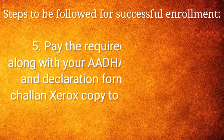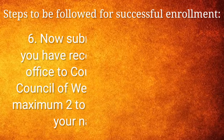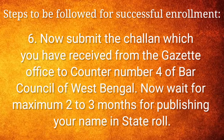Number 5: Pay the required fees in cash along with your Aadhaar card Xerox copy and declaration form, along with the Challan Xerox copy, to the Gazette Office. Number 6: Submit the Challan received from the Gazette Office to counter number 4 of Bar Council of West Bengal. Now wait for a maximum of 2 to 3 months for your name to be published in the state roll.